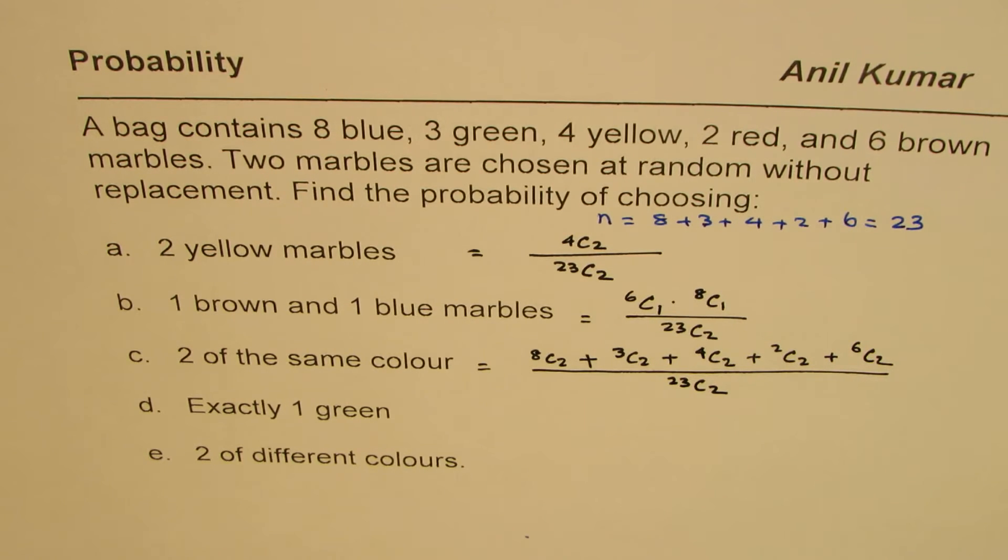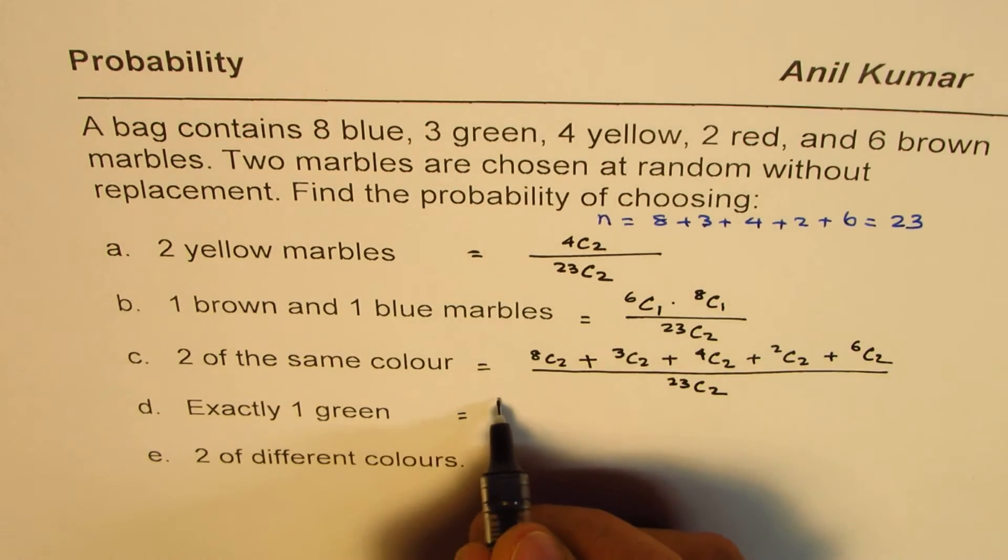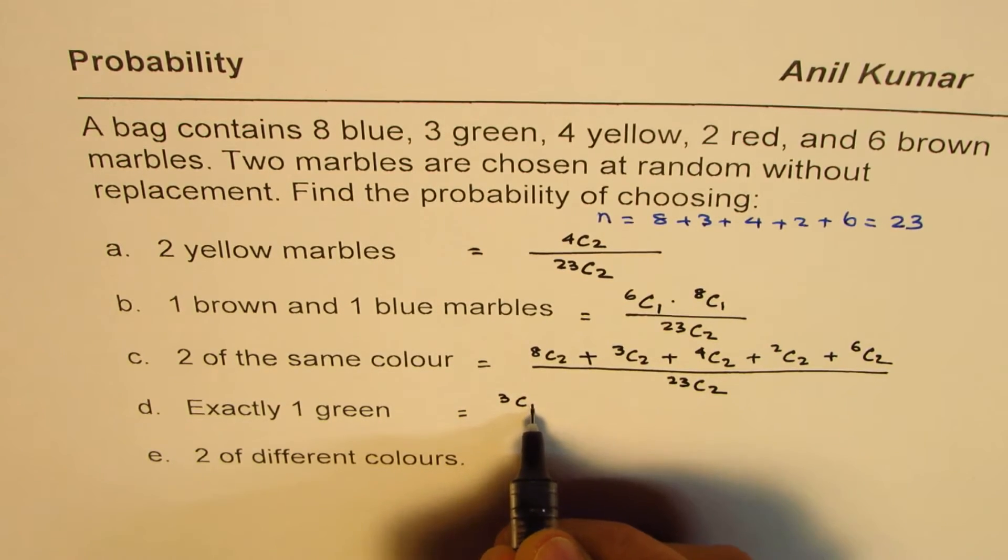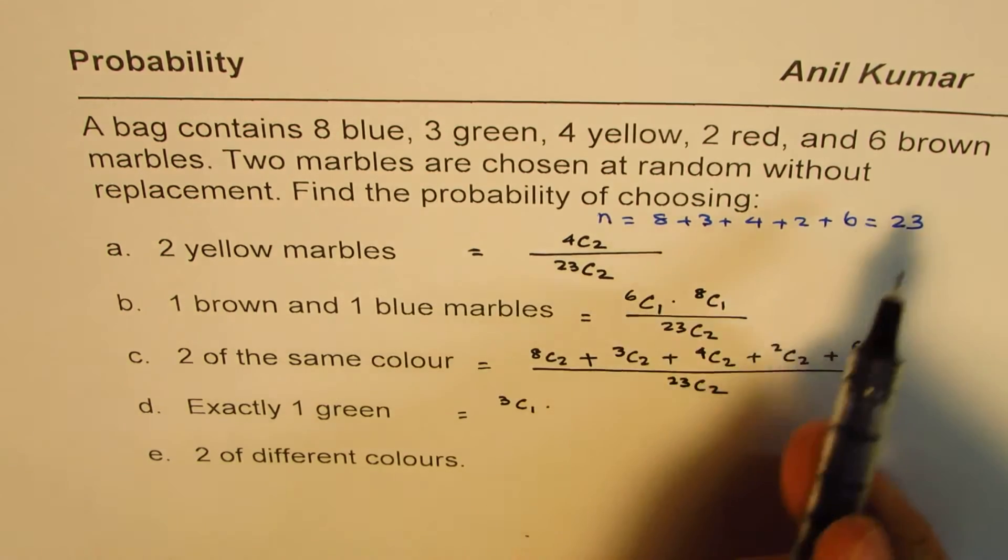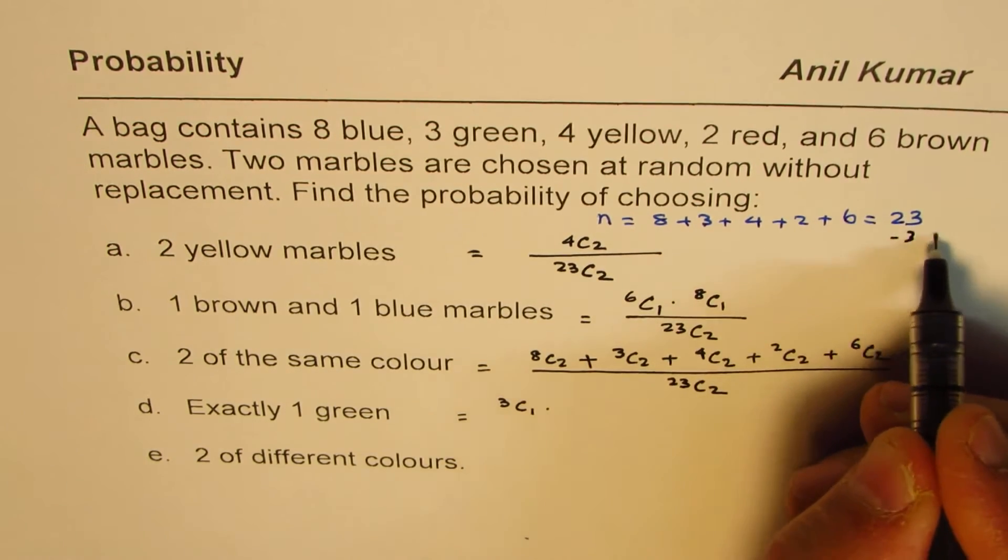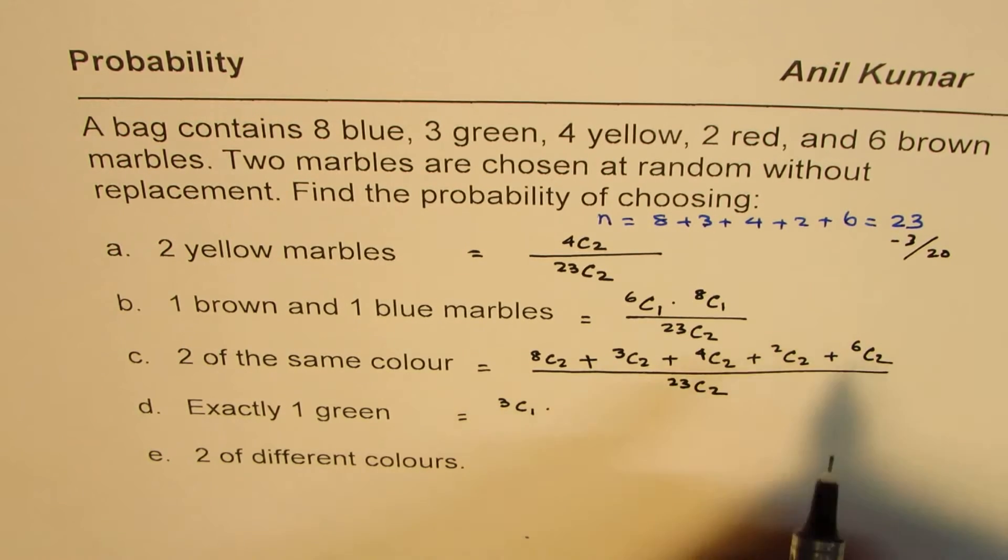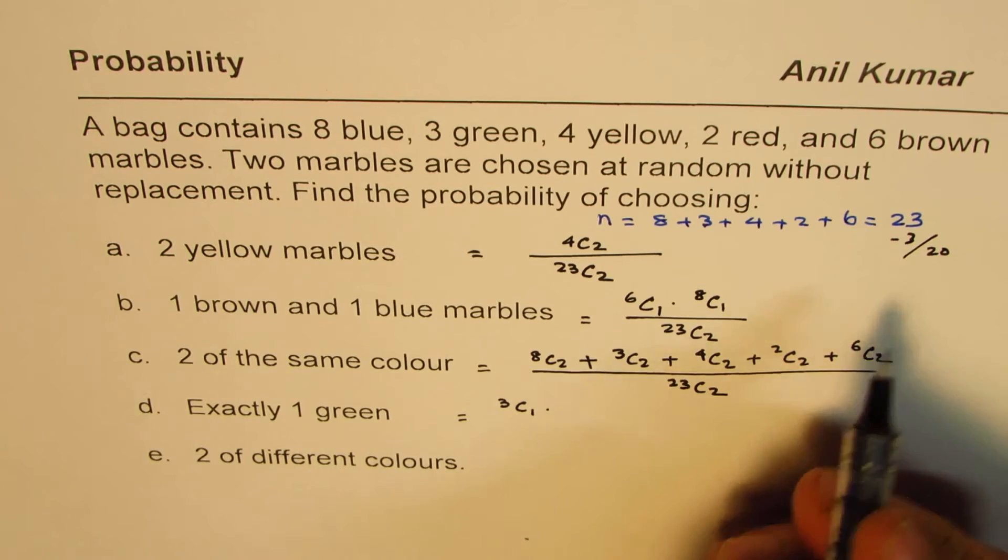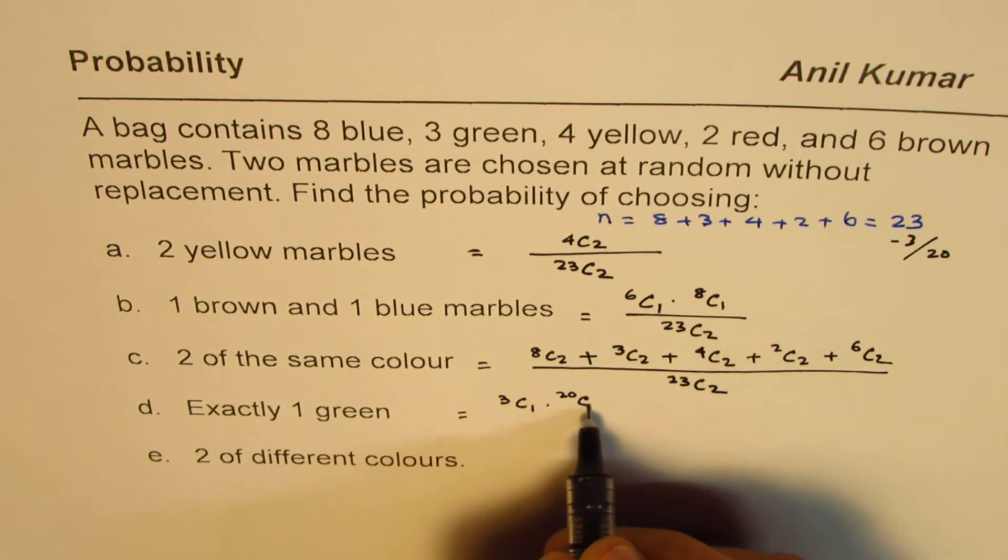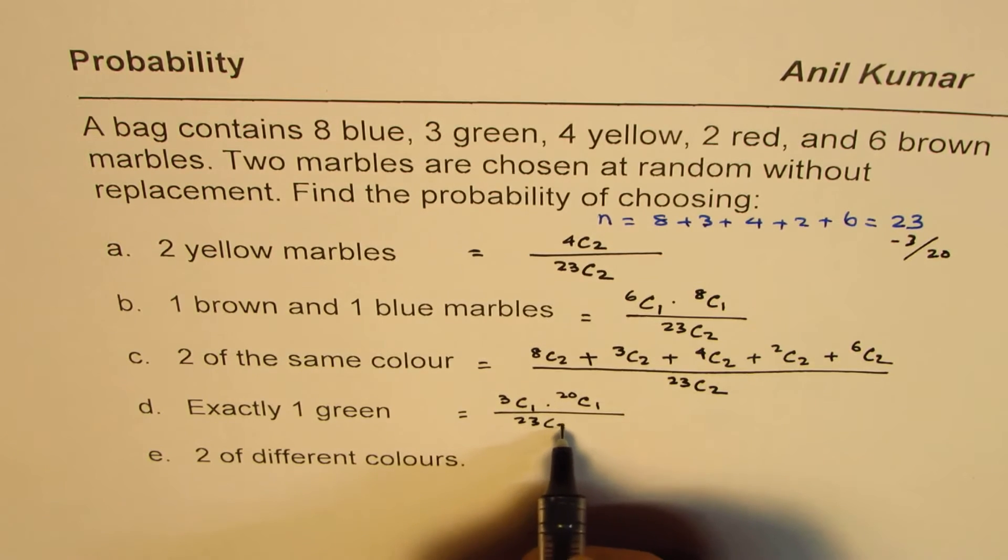Now, D is exactly 1 green. So when we say exactly 1 green, it means green is 3. So from 3, we select 1. The other one is from rest. So 23 is all. So if I take away 3, I'm left with 20. So we have to select the next one from 20. So 20C1 divided by 23C2.